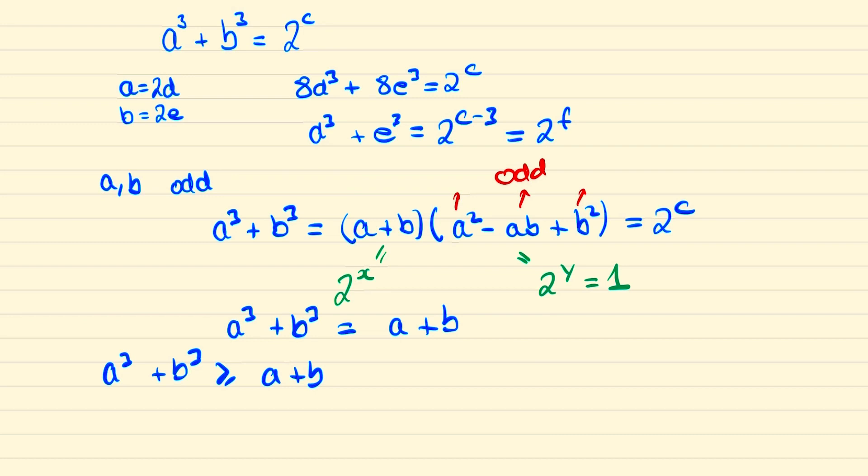So that's the only odd solution: a = b = 1. And subbing both these values into our original equation, we find 1³ + 1³ = 2¹, that's telling us that c is also equal to one.